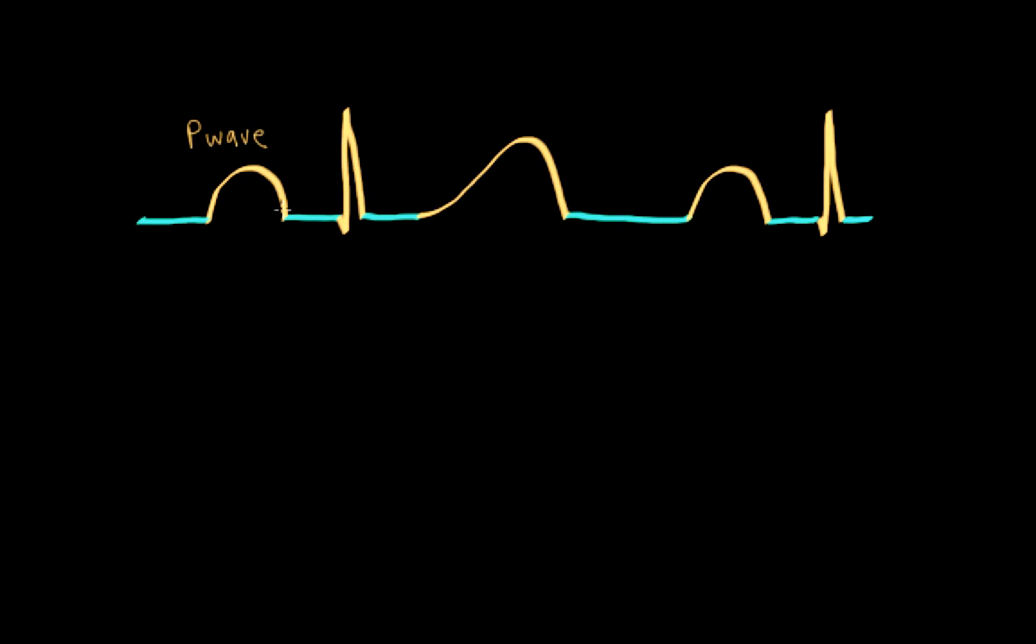Most of the time we see upright P wave deflection, but in some leads you might see a biphasic P wave or even an inverted P wave. That's normal. The P waves can look different depending on which lead you're looking at.